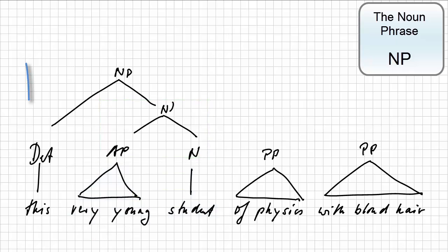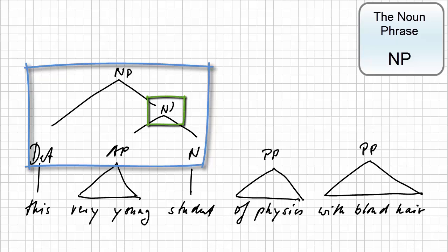So, together with the determiner, we get this structure, where the internal noun phrase is represented as n-bar, written with an apostrophe.